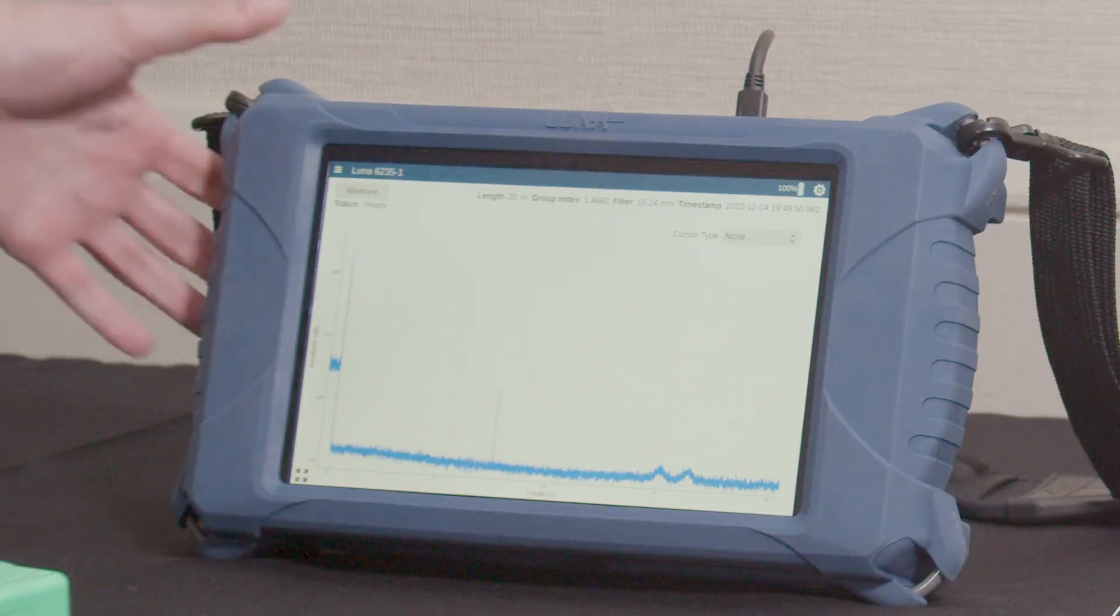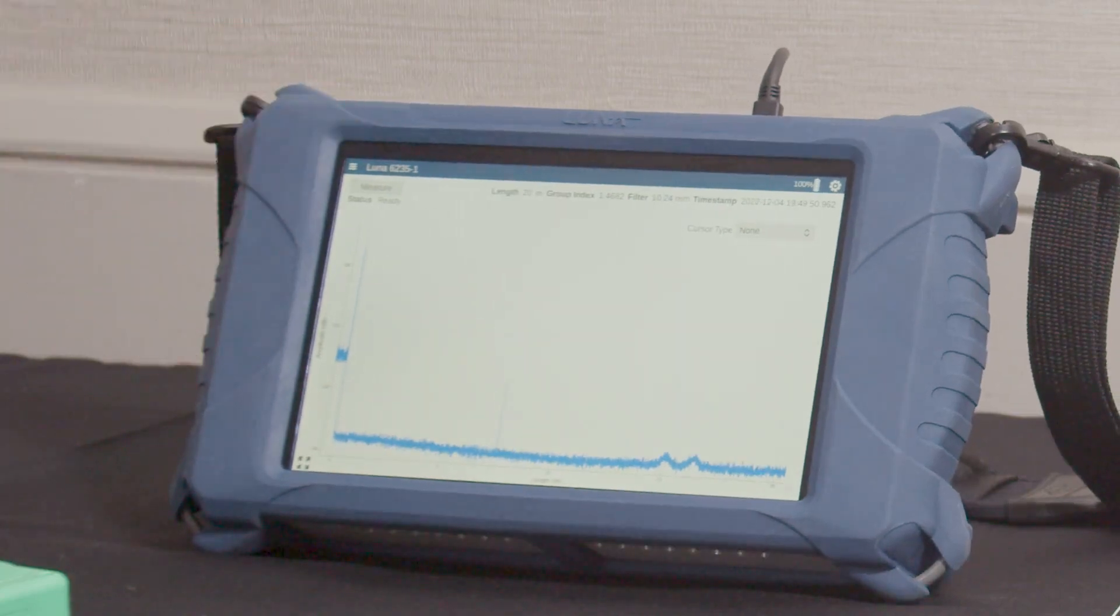This is Luna's OBR6200, our portable reflectometer. Very much like the 6415, we can look at the reflected optical energy as a function of time delay.